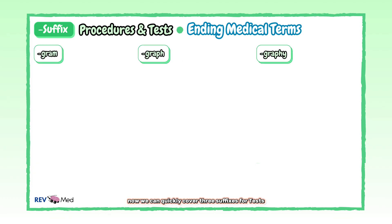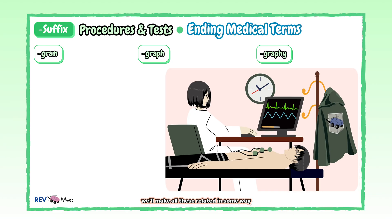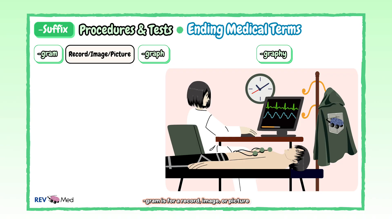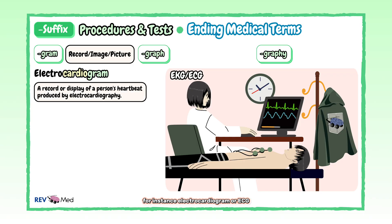Now we can quickly cover three suffixes for tests. We'll make all of these related in some way, so pay attention. "-Gram" is for a record, image, or picture. For instance, electrocardiogram, or ECG — also known as EKG — is a simple and fast test to evaluate the heart's electrical activity through repeated cardiac cycles.